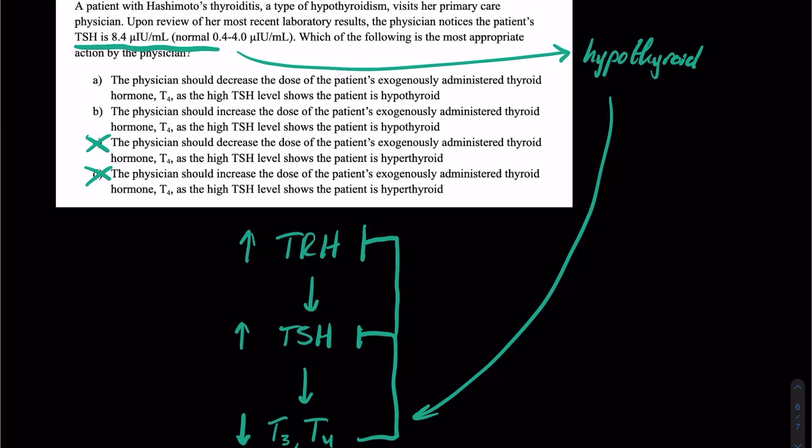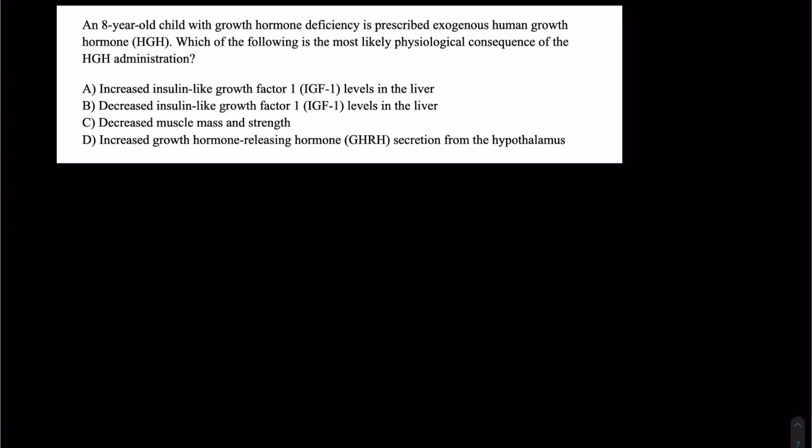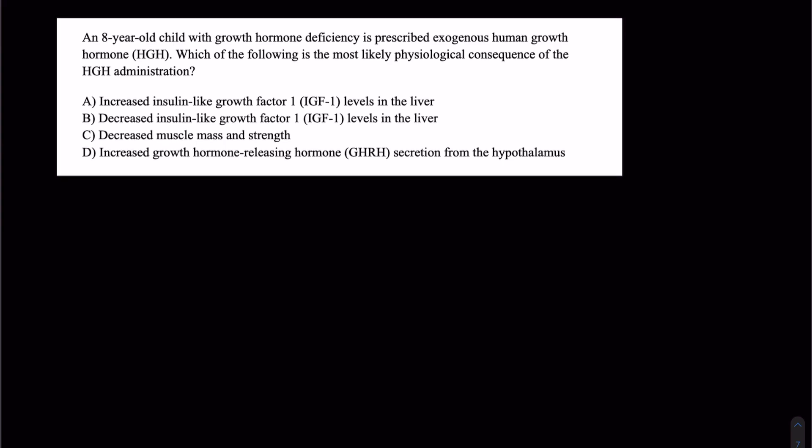We can eliminate answers C and D that tell us the patient is hyperthyroid. The question becomes, should we decrease the dose of their exogenously administered thyroid hormone or increase the dose? The answer is increase the dose. We're hypothyroid. We don't have enough thyroid hormone due to the inflammation from this patient's underlying condition, Hashimoto's thyroiditis.